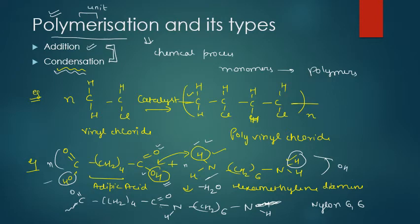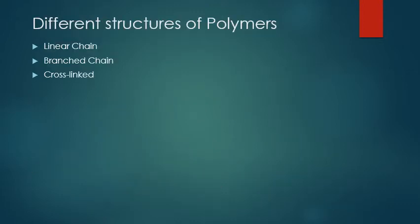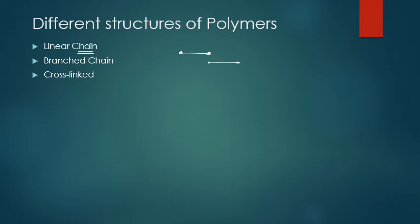Now, there are also different structures of polymers which affect their properties. We have linear chain polymers, branched chain polymers, and cross-linked polymers. In a linear chain, atoms and compounds combine in a single chain with no side branches.